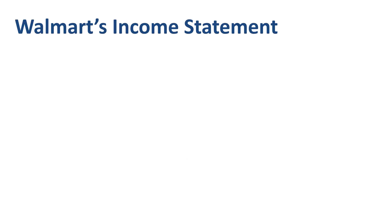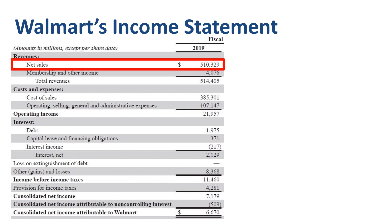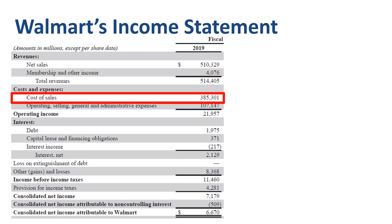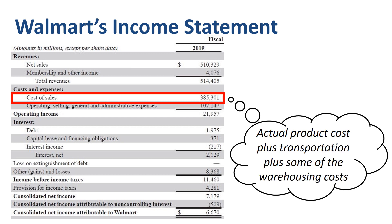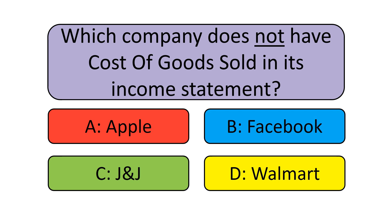Walmart's income statement shows net sales of $510 billion at the top and net income of $7 billion at the bottom. Cost of Sales is the actual product cost, plus transportation, plus some of the warehousing costs. According to Walmart's annual report, the majority of the cost of warehousing and occupancy for distribution facilities is included in operating, selling, general and administrative expenses — not in COGS. So the answer to the question is Facebook, as this company does not sell physical goods.